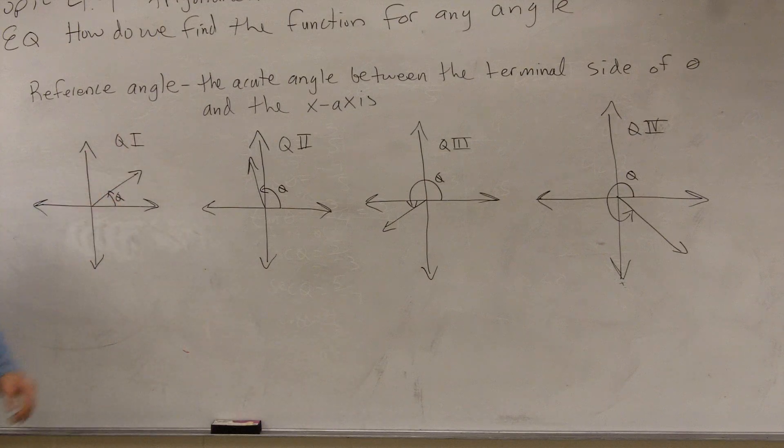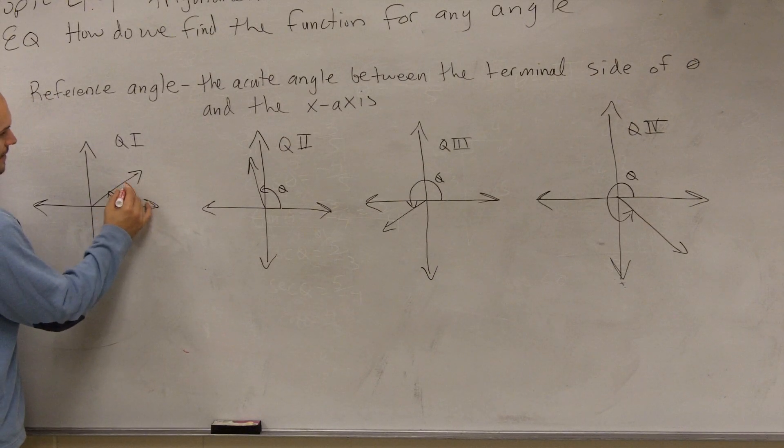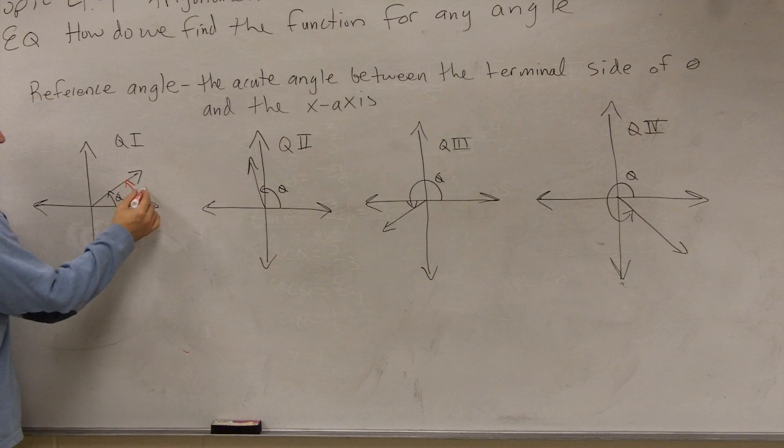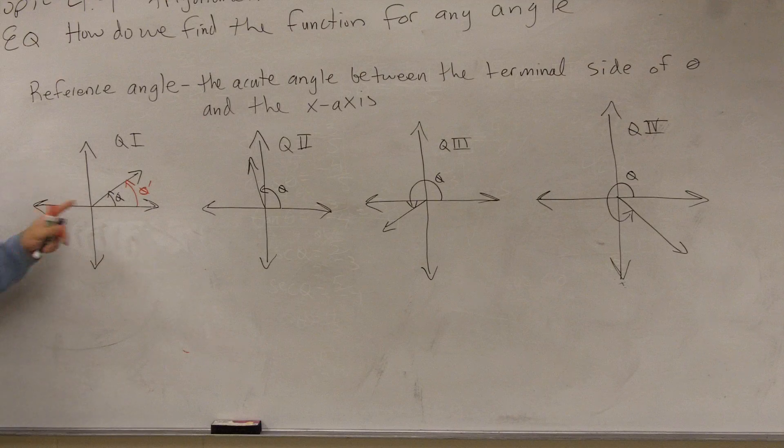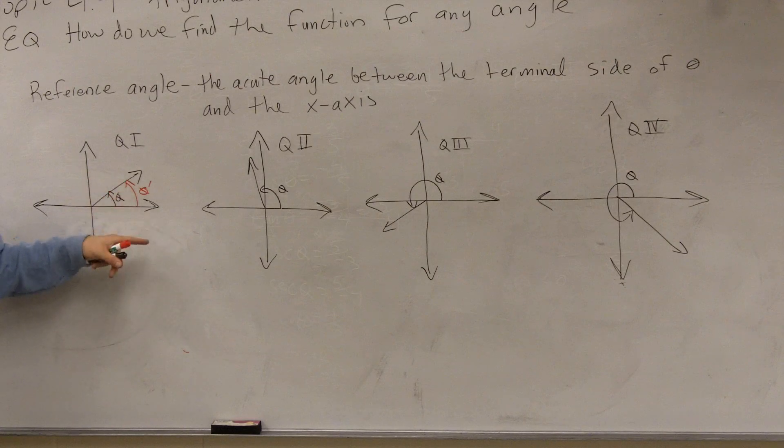So let's look at an angle in quadrant one. In quadrant one, you have your terminal side of your angle right here. So what is the acute angle between this terminal side and the x-axis? Well, you can draw that as right there, which we'll call theta prime. So our reference angle in this example is just between our terminal side and the x-axis. That's your acute angle. Is that an acute angle? Yes, it is.